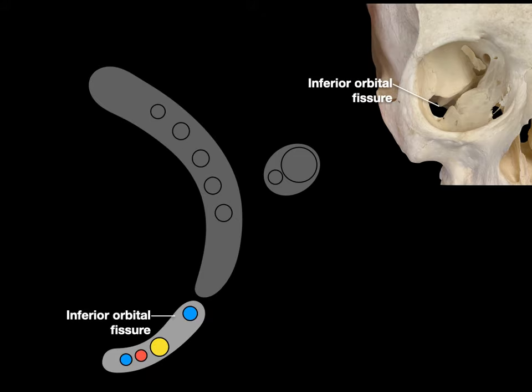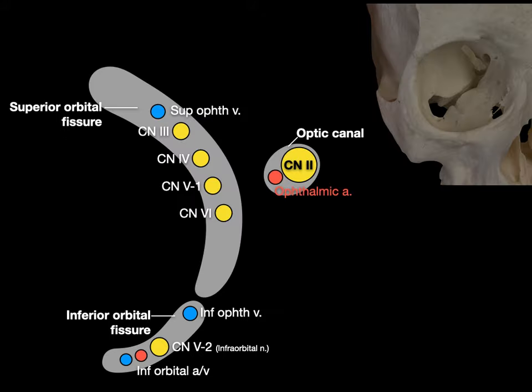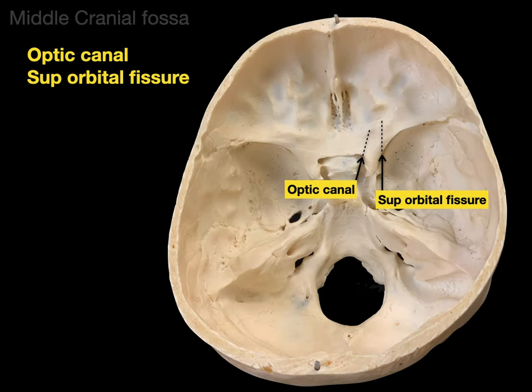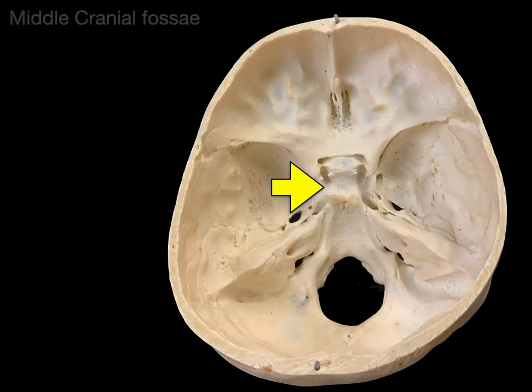In the inferior orbital fissure: the inferior ophthalmic vein goes to the cavernous sinus and the pterygoid plexus of veins, as well as the facial vein — it goes two ways. Cranial nerve V2, the infraorbital nerve, is the continuation of the V2 branch from the foramen rotundum, along with the inferior orbital artery and vein. Now let's go back to the middle cranial fossa, where we've seen the optic canal and superior orbital fissure.